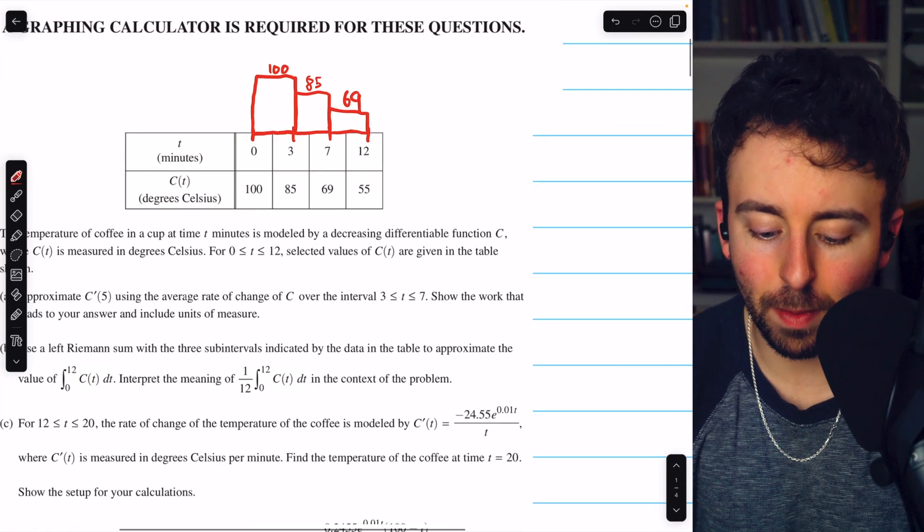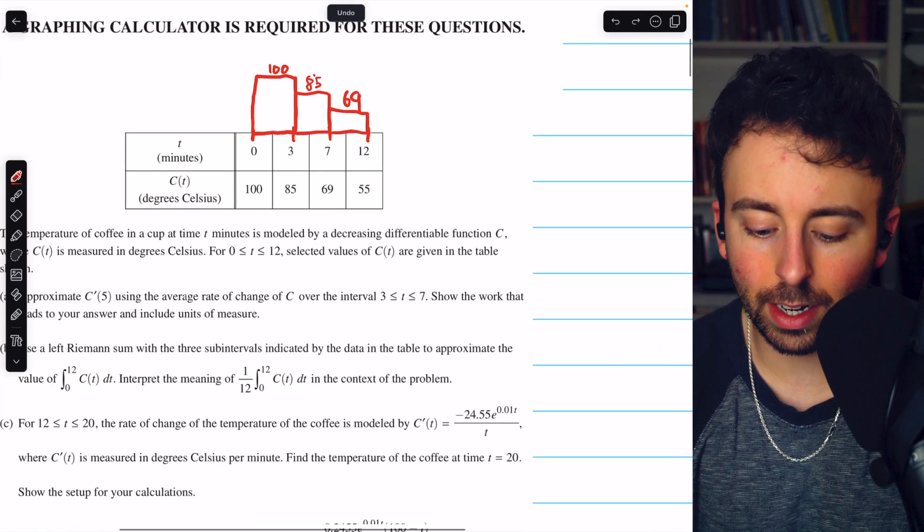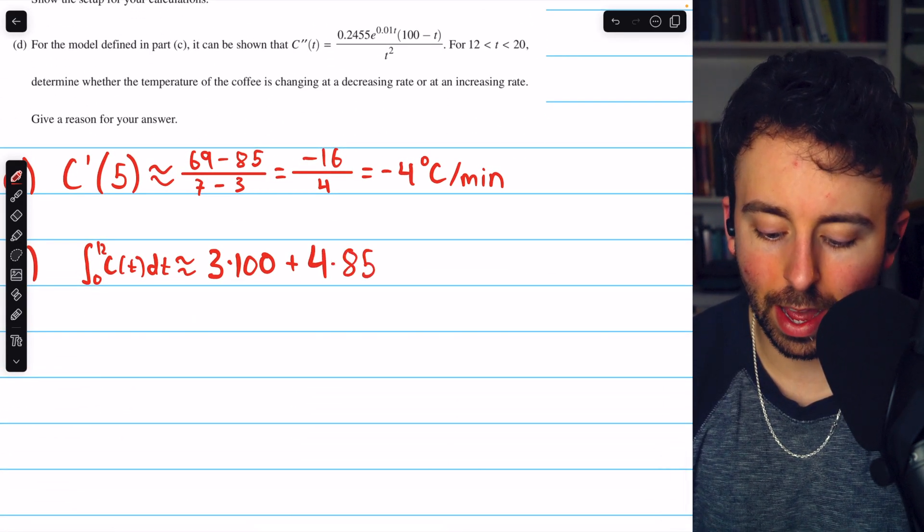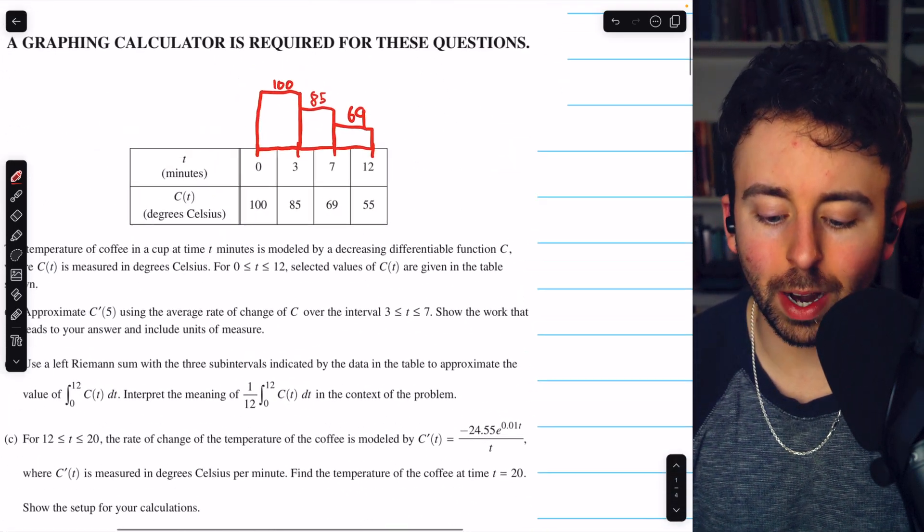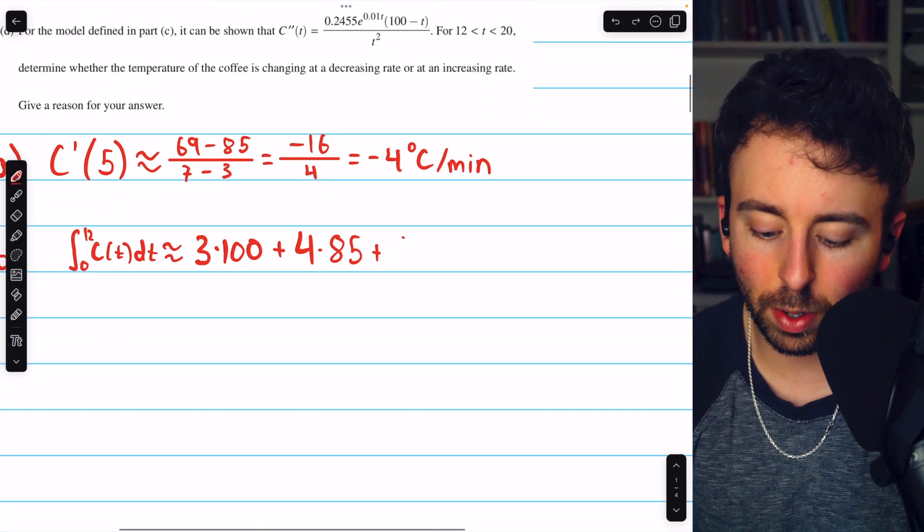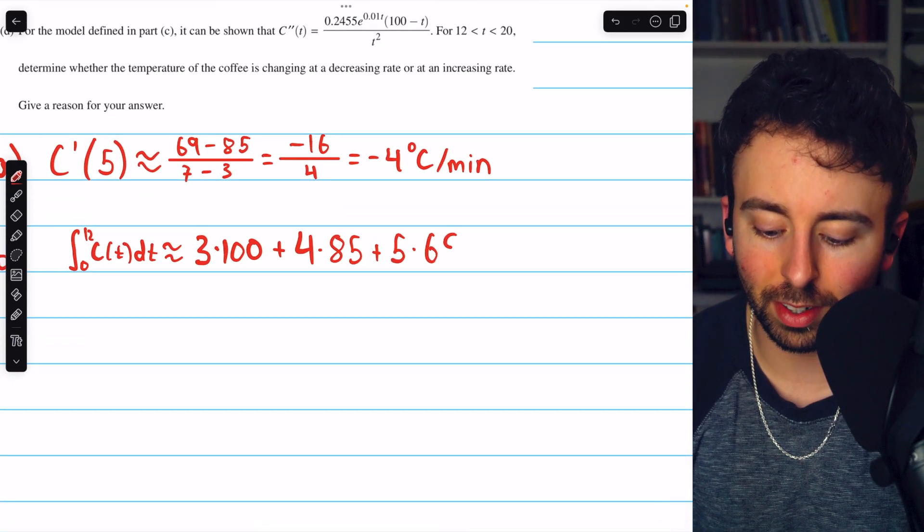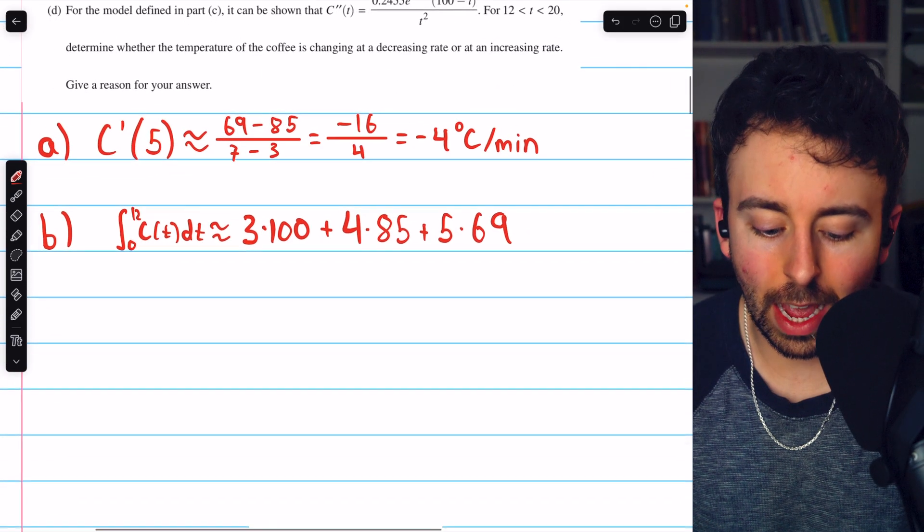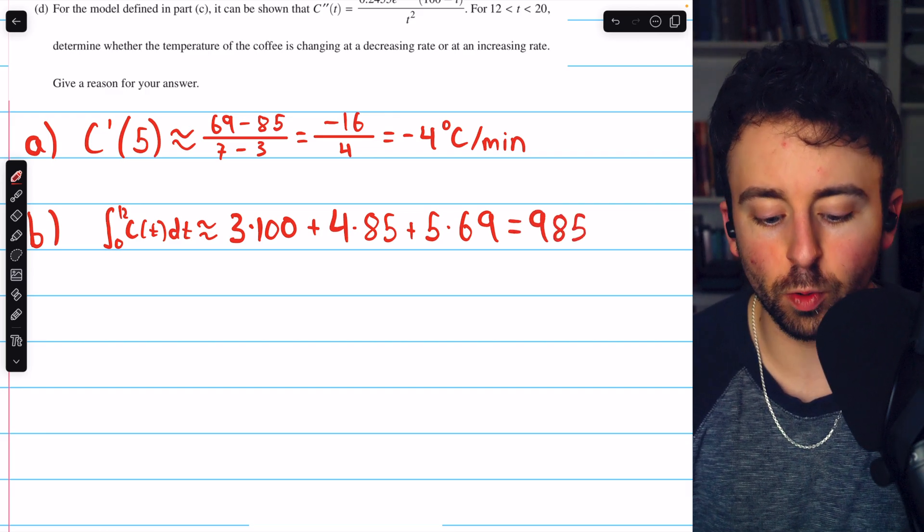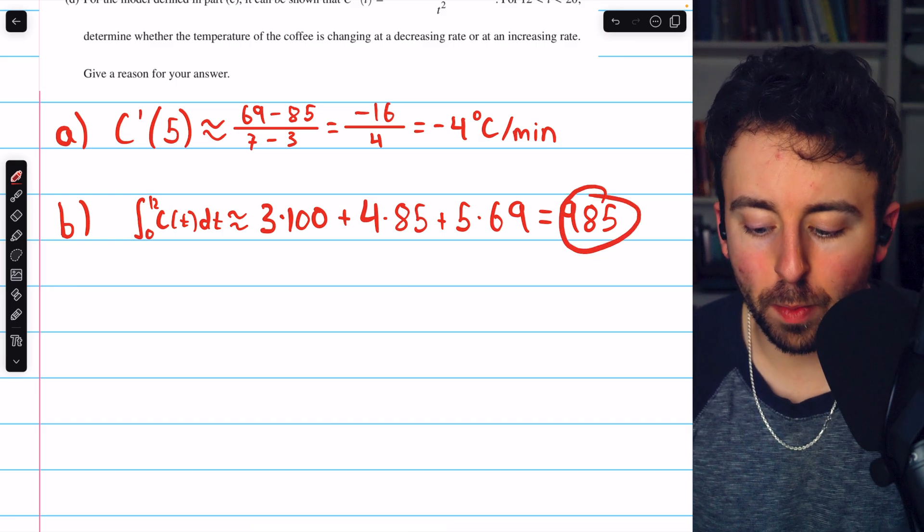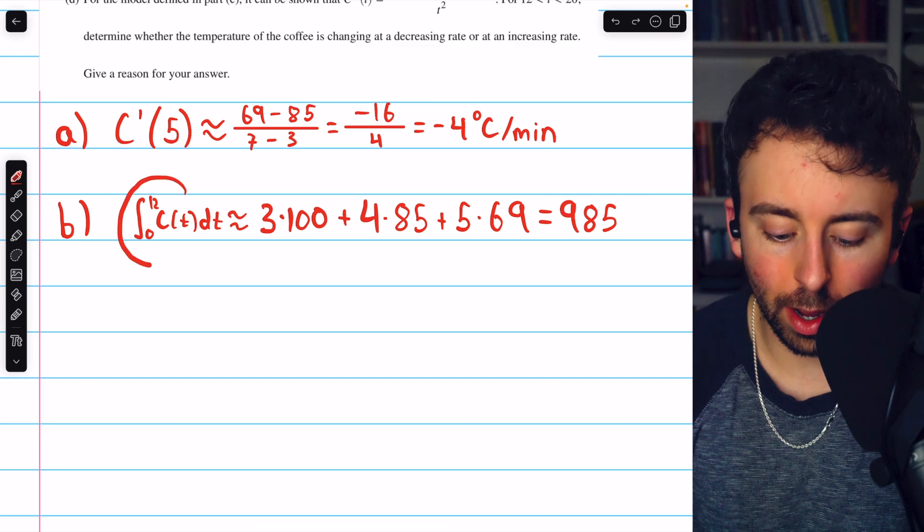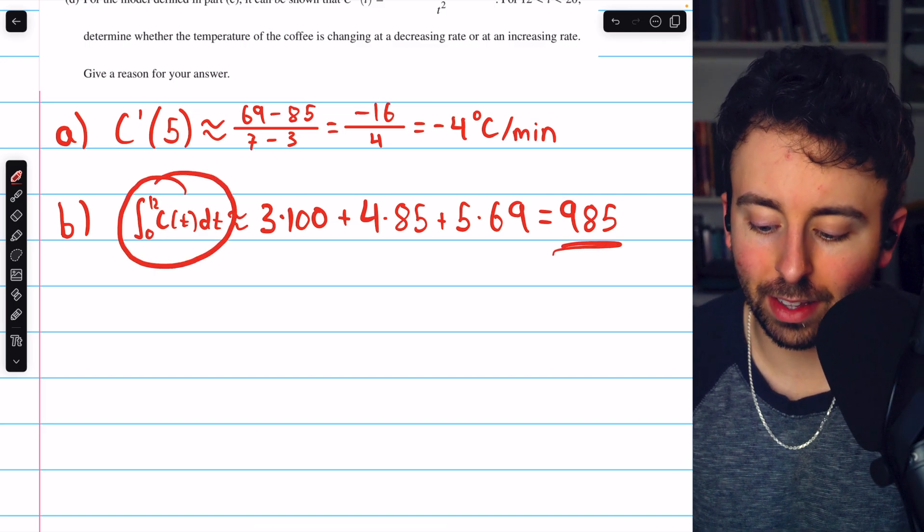The second rectangle has a base length of 4 and a height of 85, so its area is 4 times 85. The third and final rectangle has a base length of 5 and a height of 69, so its area is 5 times 69. This is part of the calculator section, so you can use your calculator to quickly find this equals 985. So that is our approximation using a left Riemann sum with three subintervals of this integral value. That's the approximation.